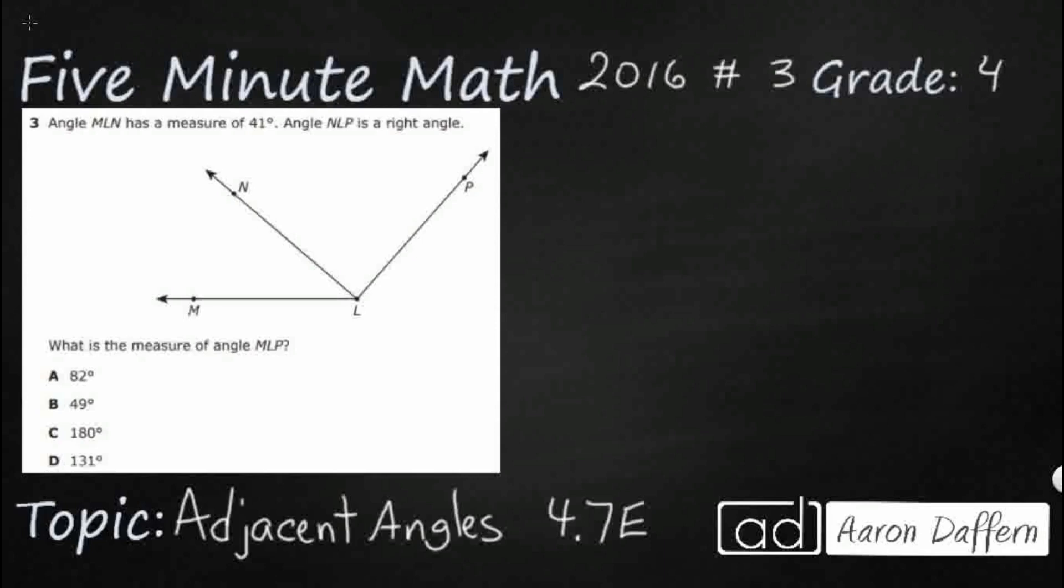So, we have some angles we need to look at first. We've got angle MLN with a measure of 41 degrees, and then angle NLP is a right angle, and we need to find the measure of MLP.